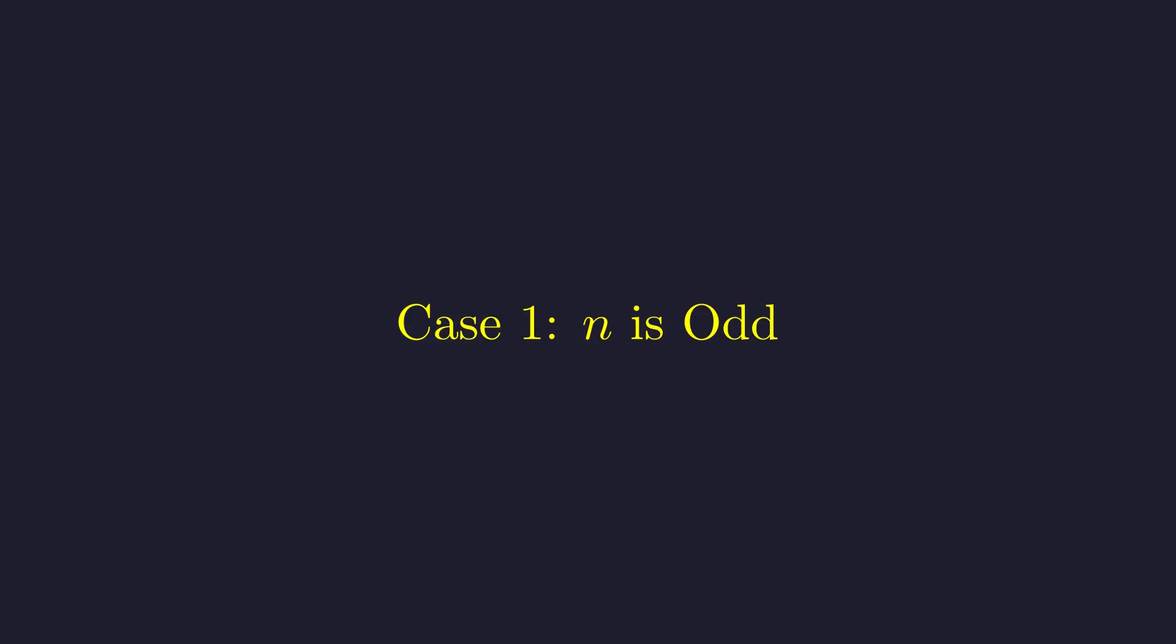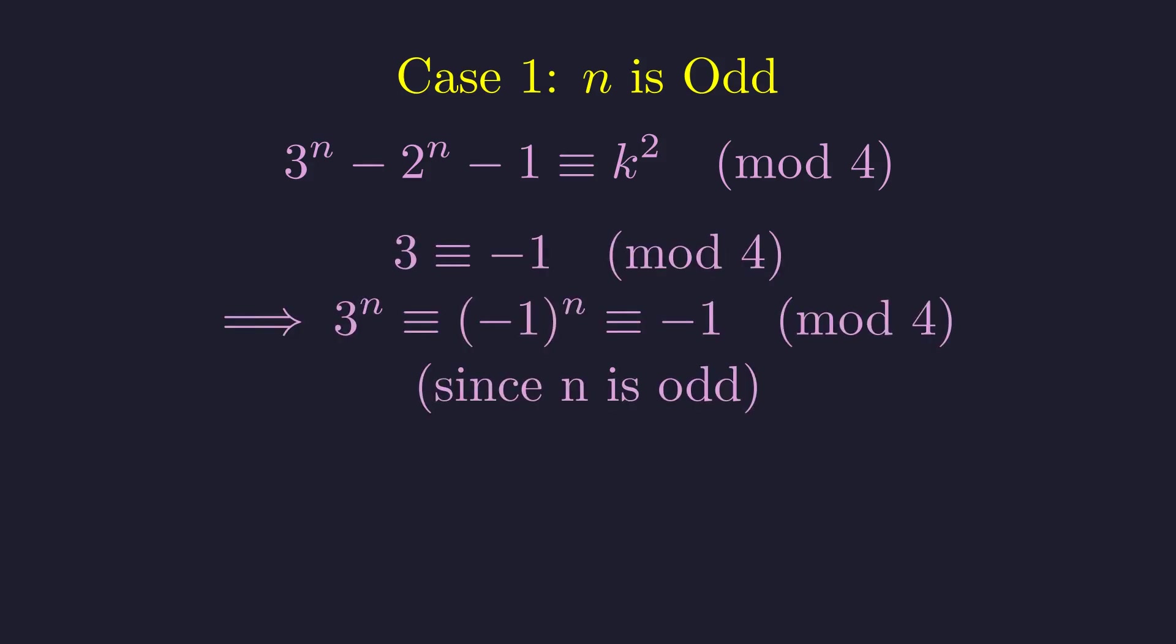Let's start with odd values of n. We already know n equals 1 works, so we need to check if any odd n greater than 1 can give us a perfect square. Here's where modular arithmetic becomes our friend. Let's look at our equation modulo 4, since perfect squares have a very predictable pattern when you divide by 4. Notice that 3 is equivalent to negative 1 when working modulo 4. So 3 to an odd power is also equivalent to negative 1 modulo 4.